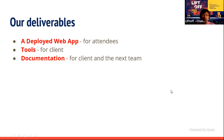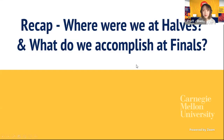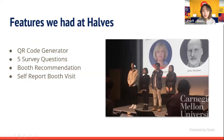Now sharing where we were at halves — we were still at the prototype stage. The features completed by halves included a QR code generator, five survey questions, booth recommendations, and self-report booth visits. After halves, the first new feature added was the tutorial page. Since we saw a lot of confusion through playtesting, we provided instructions to users when they first use the app.